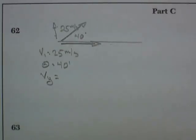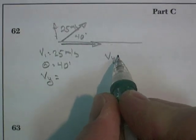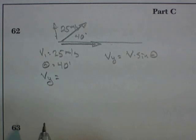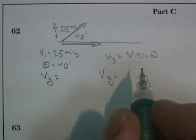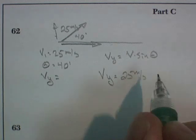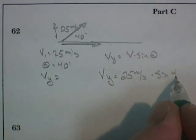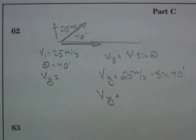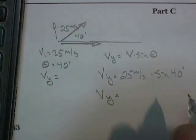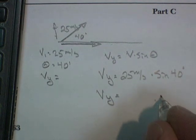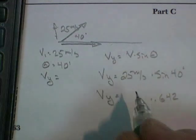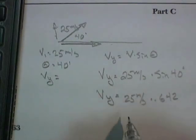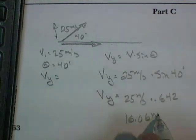We want velocity in the y. So velocity in the y-axis is equal to the velocity times the sine of the angle. Velocity in the y-axis is equal to 25 meters per second times the sine of 40 degrees. Velocity in the y-axis is equal to, calculator time to find the sine of 40 degrees. I got the sine of 40 degrees being 0.642. I multiply that by 25 meters per second. 16.06 meters per second.